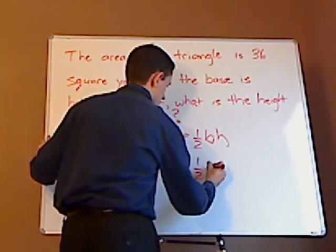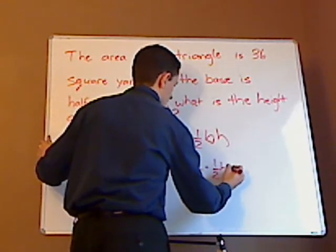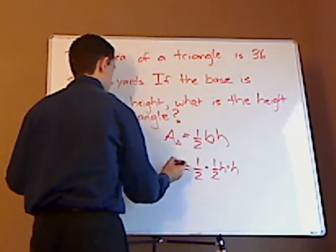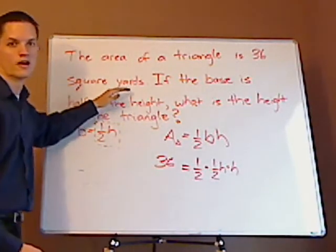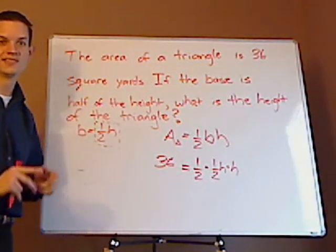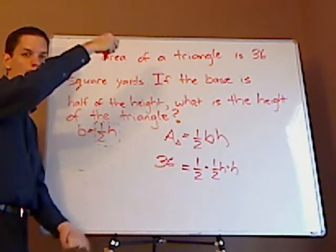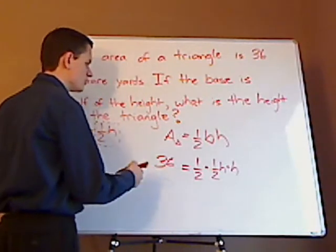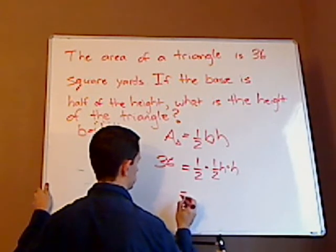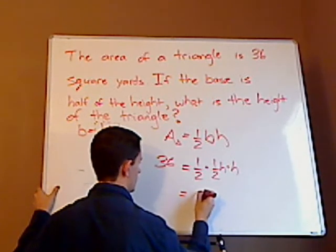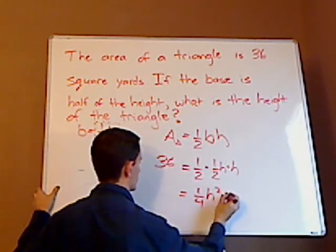You have one-half times — your base is one-half the height — times the height equals 36. Notice that square yards means area. If it's just yards, that would be a length, like height or the base. Now you just solve for h. You have one-half times one-half, which is one-fourth.